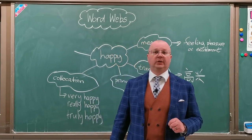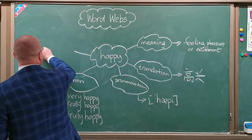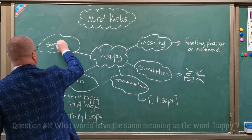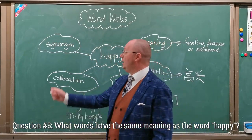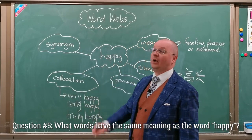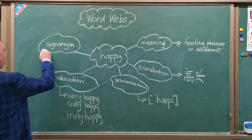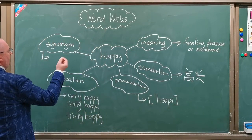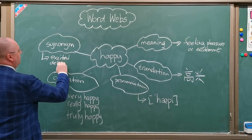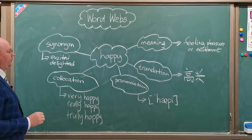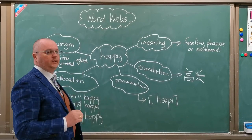Now two more things: synonyms and antonyms — they help to build vocabulary. Synonyms are words that have the same or similar meaning. So you can elicit from your students what words have the same meaning as 'happy.' Maybe you will get: 'excited,' 'delighted' — it depends on your students' vocabulary — or maybe 'glad.' These are all synonyms.